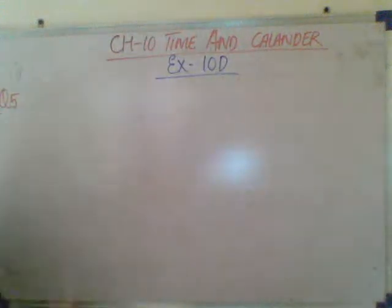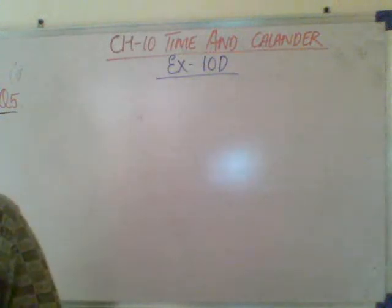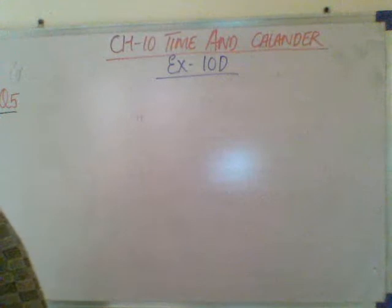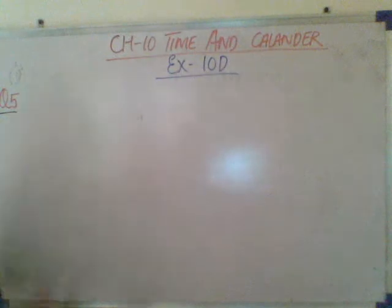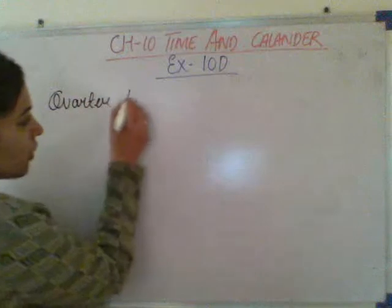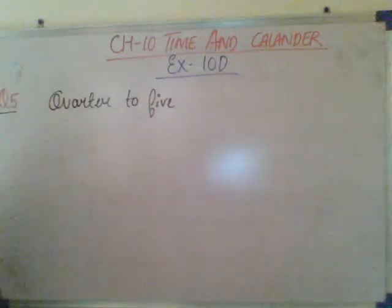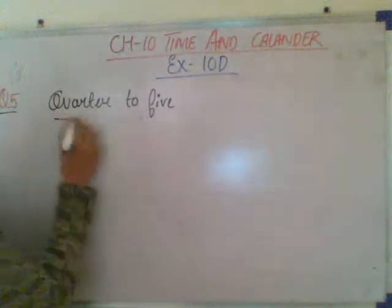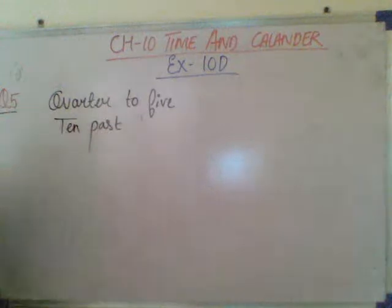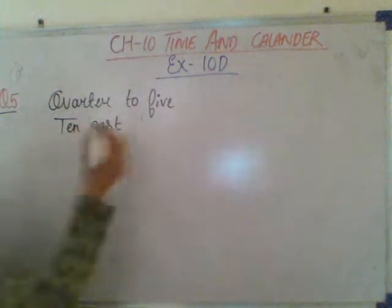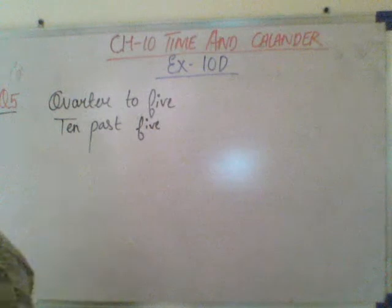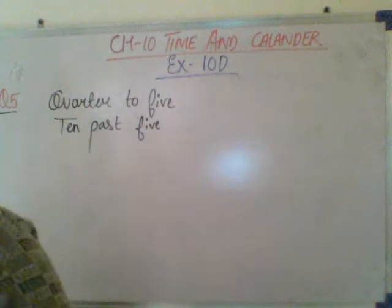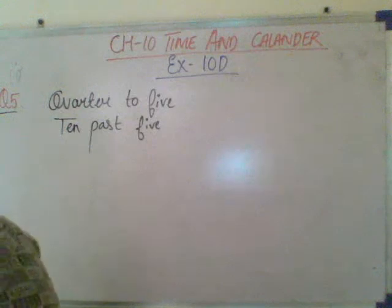I am just reading this question from the book. Question number 5: Kavita waited for a bus from quarter to 5 until 10 past 5. How long did she wait for the bus? The timings given in the question are quarter to 5 and 10 past 5. We have to find how long she waited for the bus.